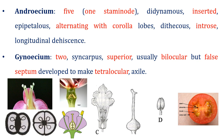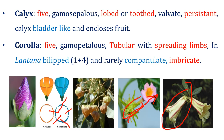As discussed, a bilabiate corolla is a zygomorphic gamopetalous corolla in which petals are so fused together that they appear to be divided into separate lips.